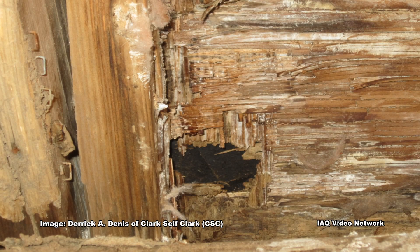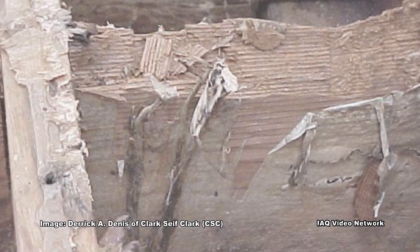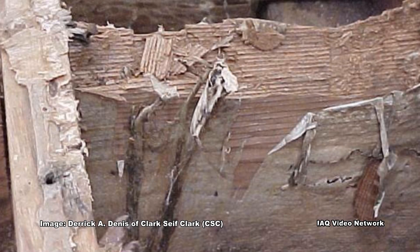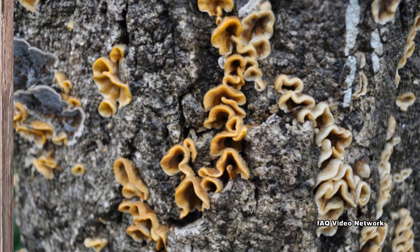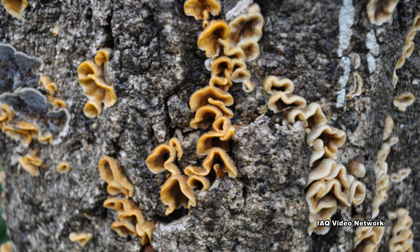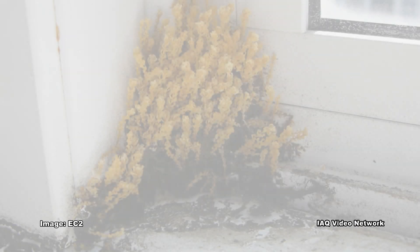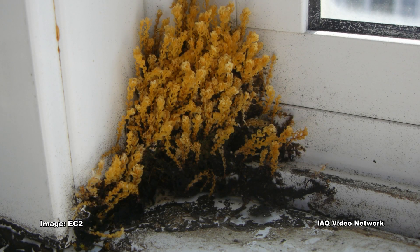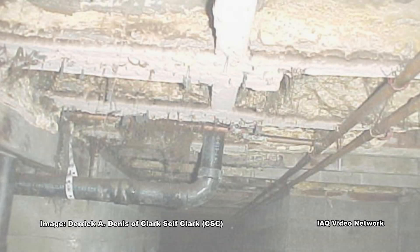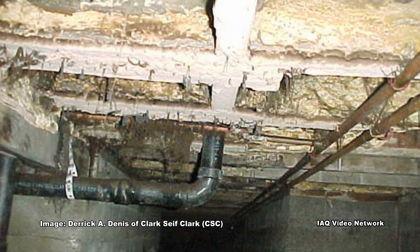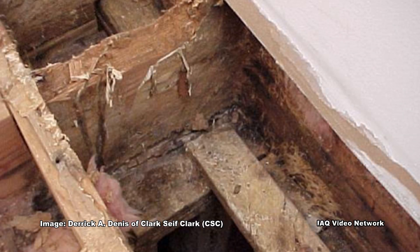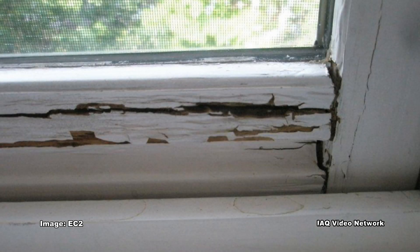Other types of fungi not only use the wood as a food source, but also cause decay by breaking down the wood fibers. There are species that will attack living trees and others that will consume dead wood that has been used to construct a building. These wood decay fungi are classified based on the type of decay they cause. The most well-known types include brown rot, white rot, and soft rot.